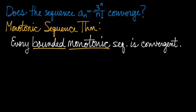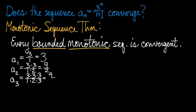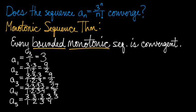To get started on proving monotonicity, I'm going to write out some terms. a_1 is 3^1 over 1 factorial, a_2 is 3^2 over 2 factorial, 3^3 over 3 factorial, 3^4 over 4 factorial, 3^5 over 5 factorial. I'm writing these out the long way so I can see the pattern better.